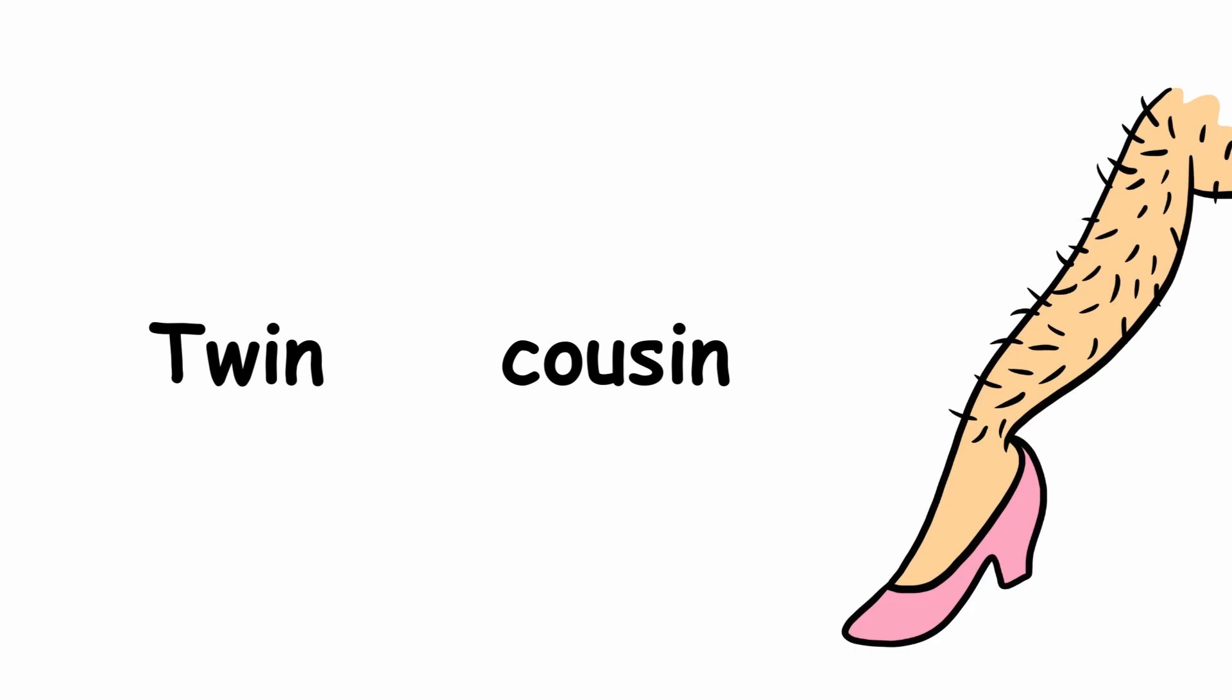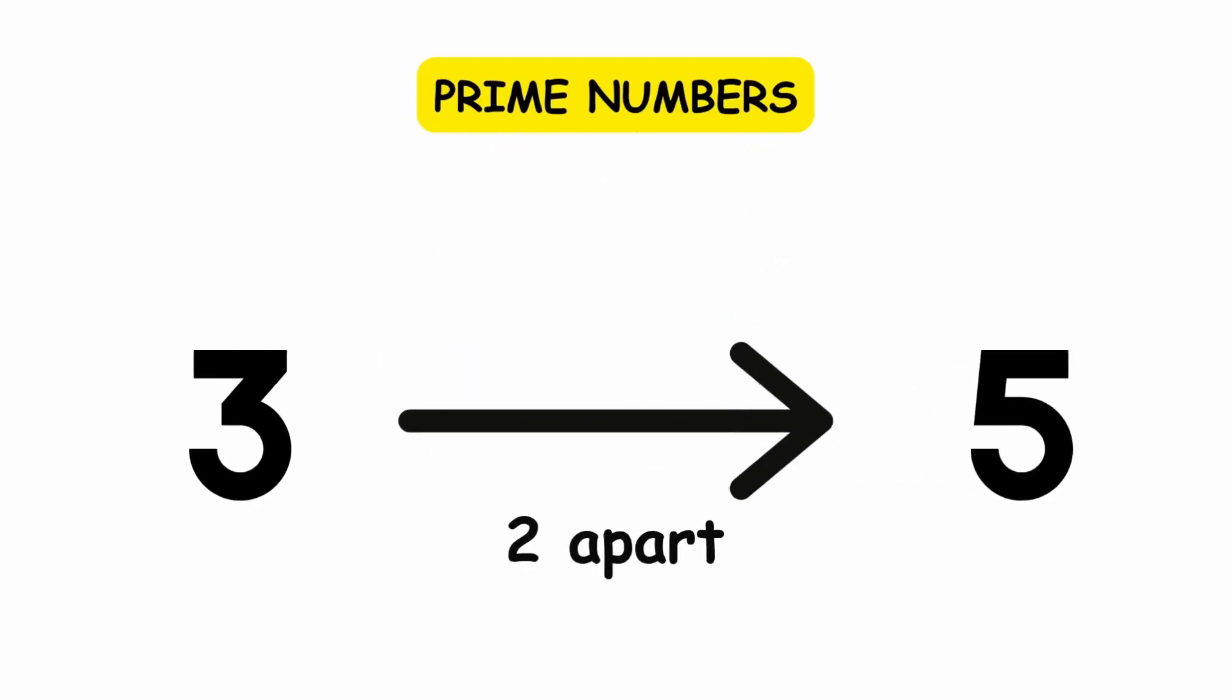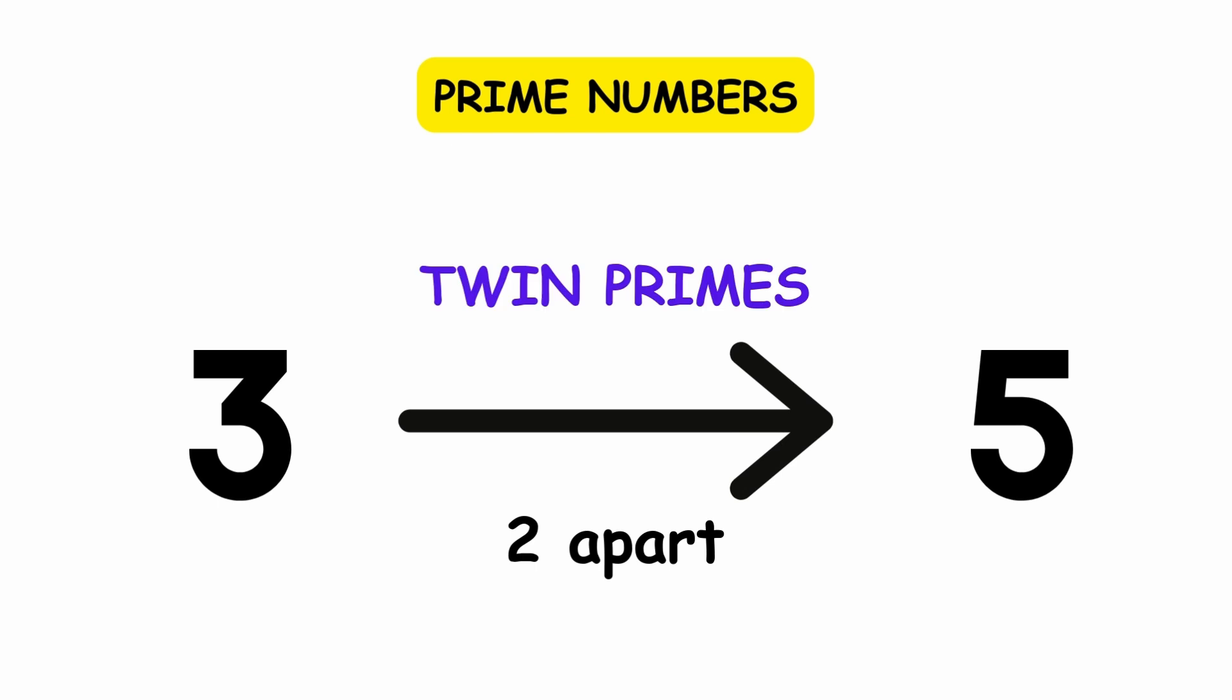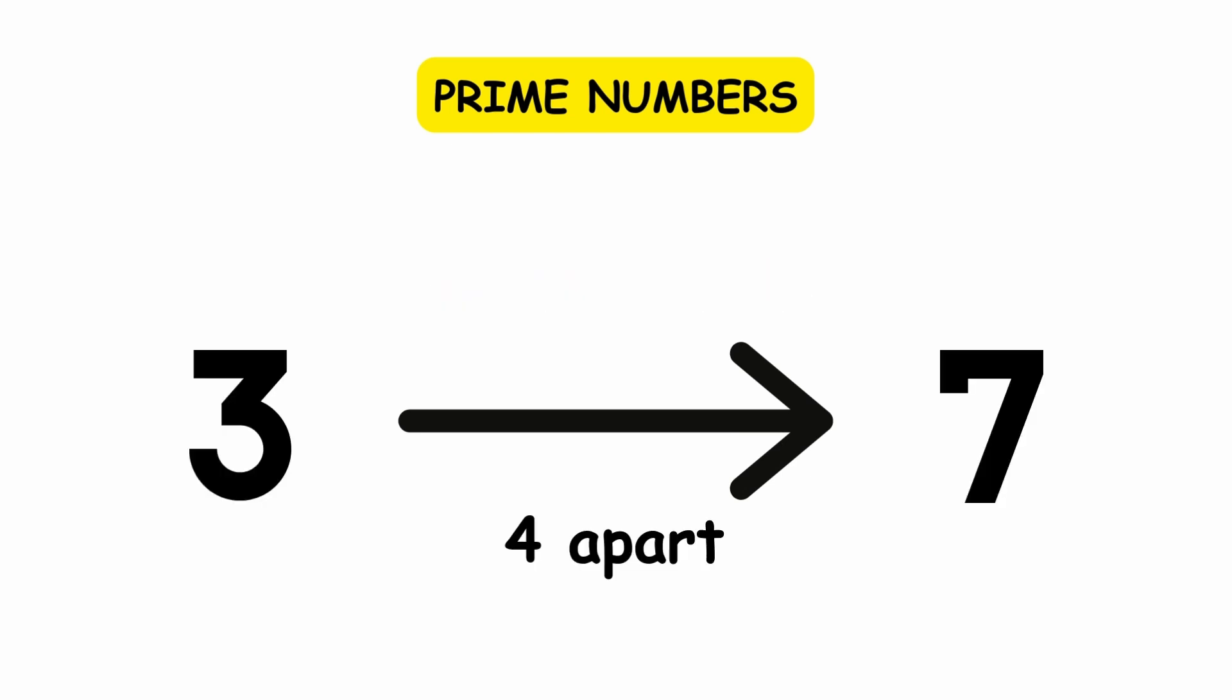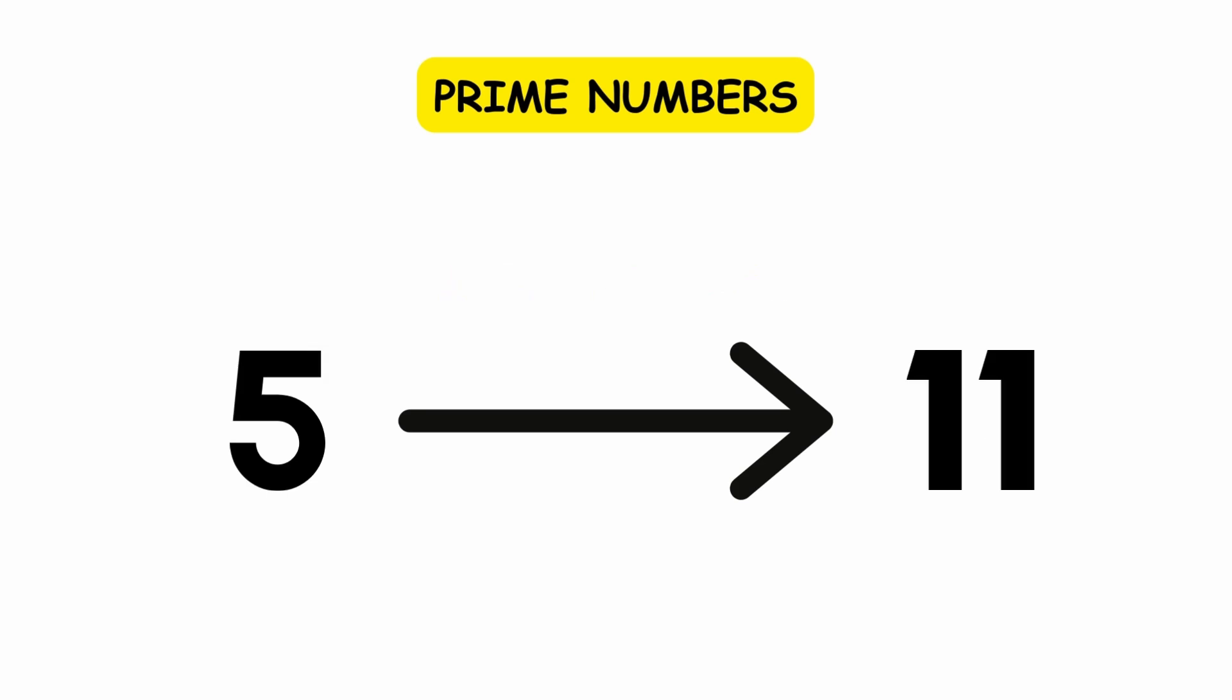Twin, cousin, and sexy primes. Consider the prime numbers 3 and 5. These are 2 apart, so they are known as twin primes. The primes 3 and 7 are 4 apart, so they are known as cousin primes. The primes 5 and 11 are 6 apart, so they are known as sexy primes.